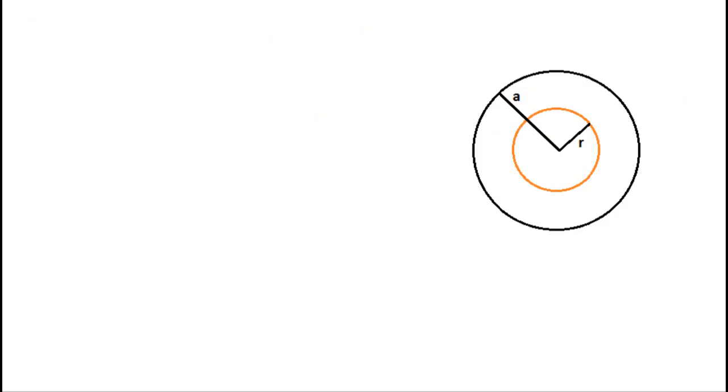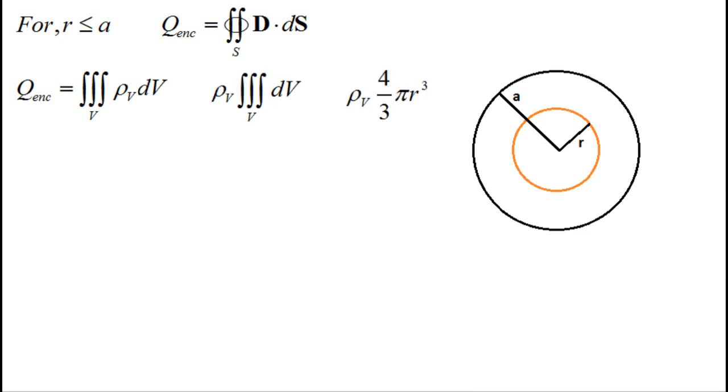Our last example is a charged sphere. We will describe what is happening both inside and outside of the sphere. Starting with the inside of the sphere, we choose a Gaussian surface of another sphere with radius little r. The total charge enclosed is the volume integral of the volume charge density. If we assume this is constant, we can pull it out and evaluate the integral easily. Notice that the expression for total charge is in terms of little r. This is because the total charge enclosed is only the charge inside the Gaussian surface.